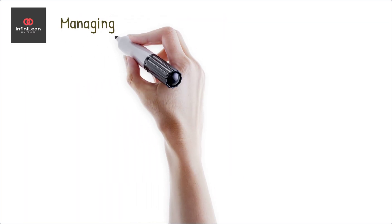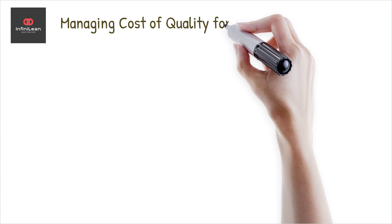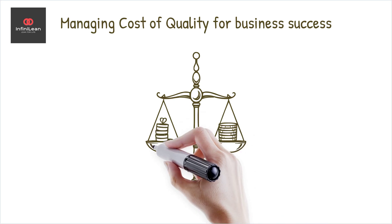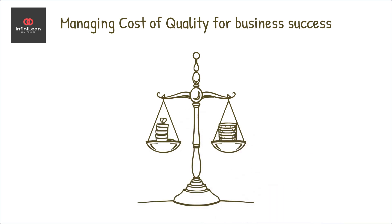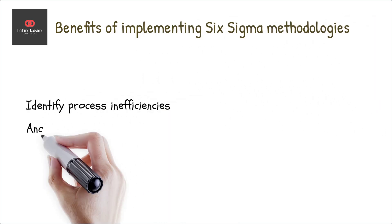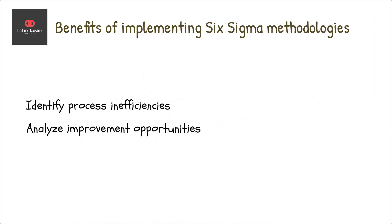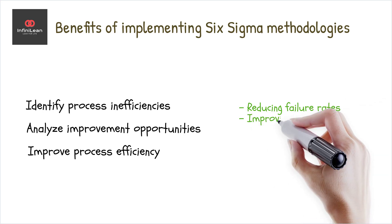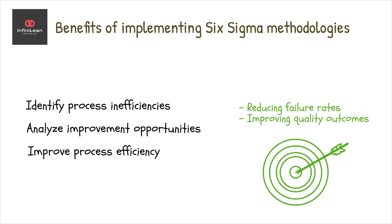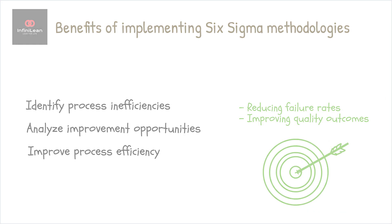By understanding and managing each component of the cost of quality, companies can achieve a balance that minimizes total costs and maximizes customer satisfaction. Implementing Six Sigma methodologies allows businesses to identify, analyze, and improve process efficiency, reducing failure rates and improving quality outcomes.